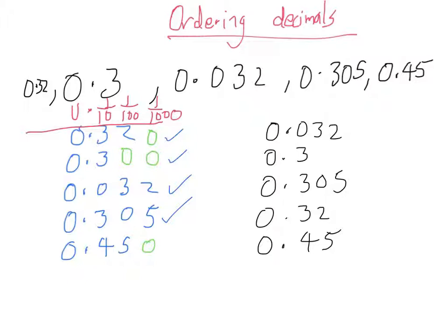These decimals are now in order from smallest up to biggest. You don't have to do it like this by adding on the extra zeros. Another way is looking down the tenths column and seeing which one's the smallest. If you look down the tenths you'll notice that this one has got the smallest number, so that's got to be the smallest decimal.